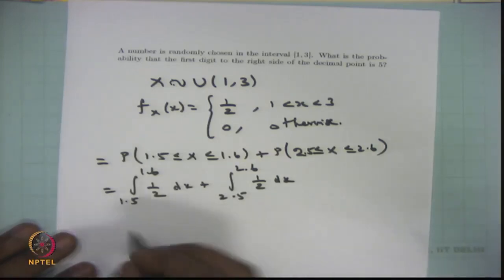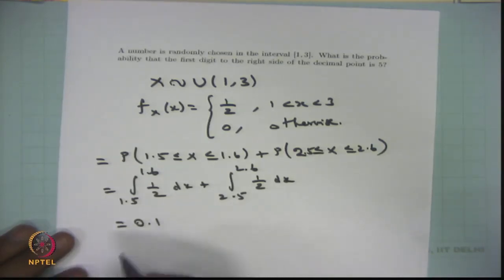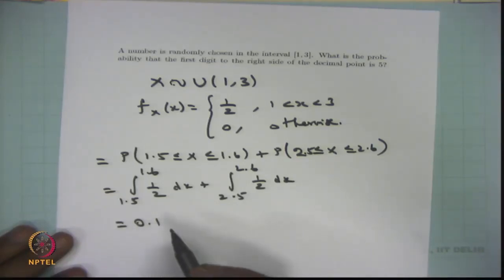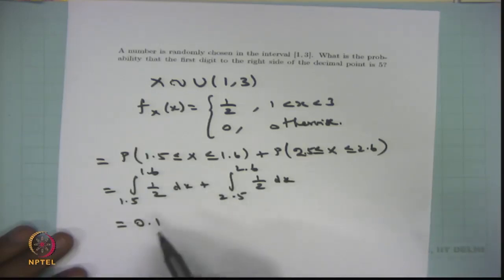Simplifying, you get the answer 0.1. That means the probability that the first digit to the right side of the decimal point is 5 is 0.1. This can also be represented as a proportion or percentage — it is 10 percent that the first digit to the right of the decimal point is 5. Like this, we can create many more problems with this setup. We will now move into the second problem.